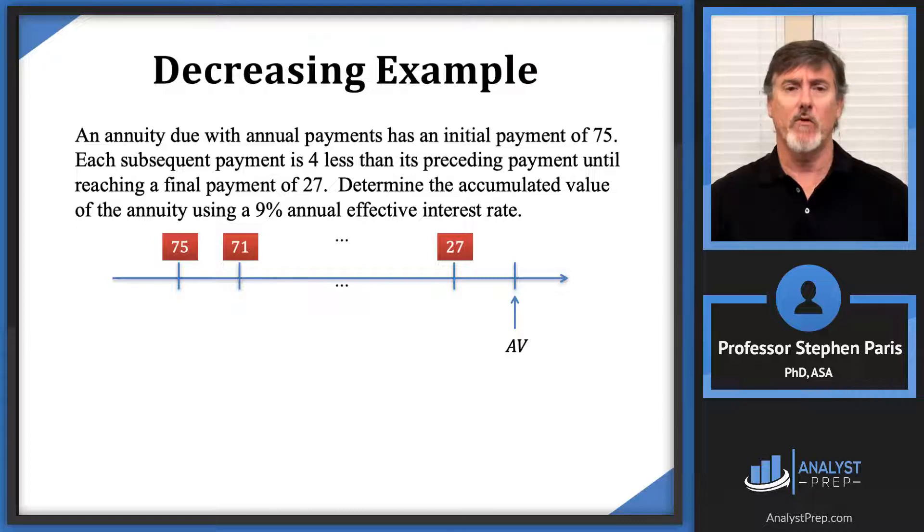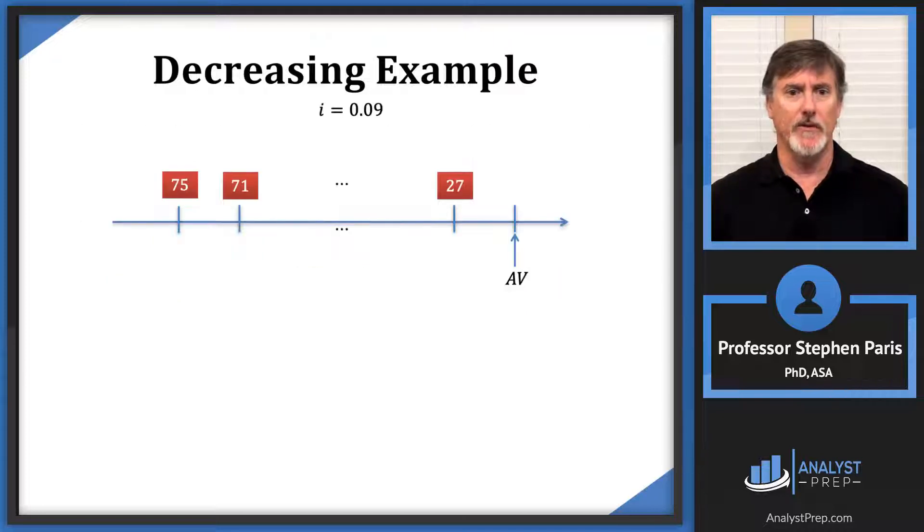The next payment will be $4 less than that, or 71, and they would continue decreasing like that. I'm going to need a little bit more room, so let me move it up to the top. I'll be using a 9% periodic effective interest rate here. The first thing that I recognize is that the absolute value of delta is 4.